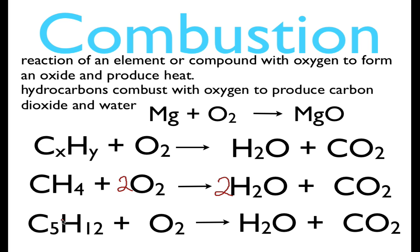Here we have C5H12 — this is pentane — reacting with oxygen to form water and carbon dioxide, again our typical products for a combustion reaction. Let's balance it: we have five carbons, so we put a five in front of CO2. Then we have 12 hydrogens, so we put a six in front of water to get 12 hydrogens. That gives us six oxygens from water and five times two is ten oxygens from CO2, for a total of 16, so we put an eight in front of O2. That is the balanced chemical equation for the combustion of pentane in oxygen.